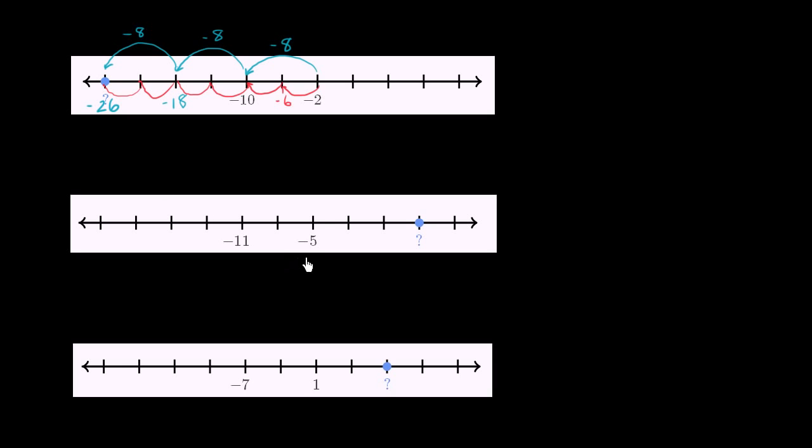Now let's tackle this one. So here we have to figure out what this blue dot here is on the right. So if we started at negative 11, you make 2 jumps to go to negative 5. So what do I have to add to negative 11 to get to negative 5? Well, I have to add 6. So if I add 6 over 2 jumps, that means that each of these jumps must be plus 3.